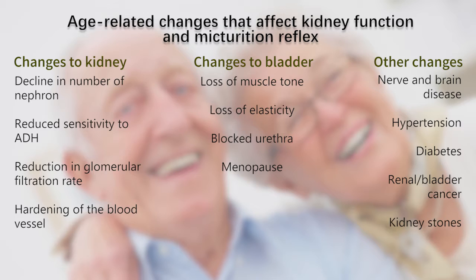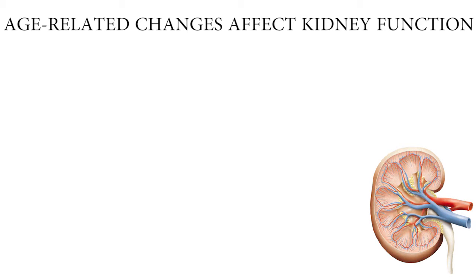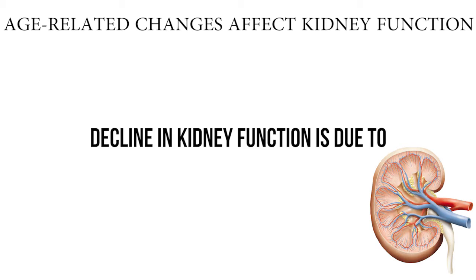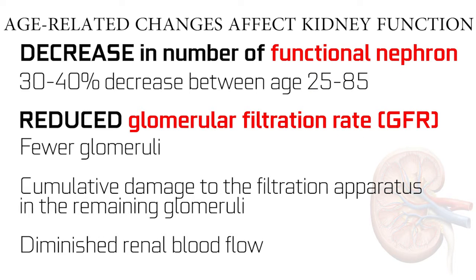These changes will be further elaborated throughout these videos. Age-related changes affect kidney function. A decline in kidney function is due to a decrease in the number of functional nephrons — about 30% to 40% decrease between the ages of 25 and 85.